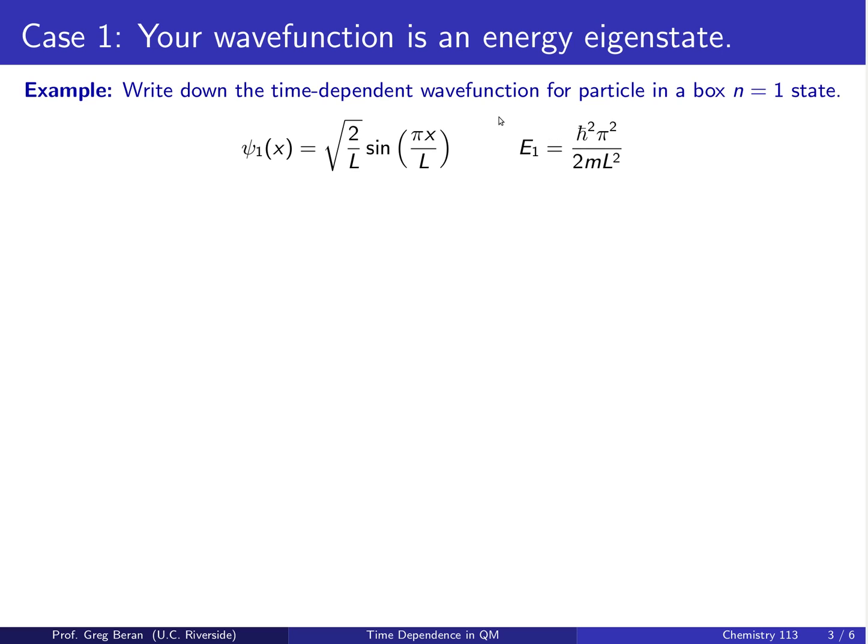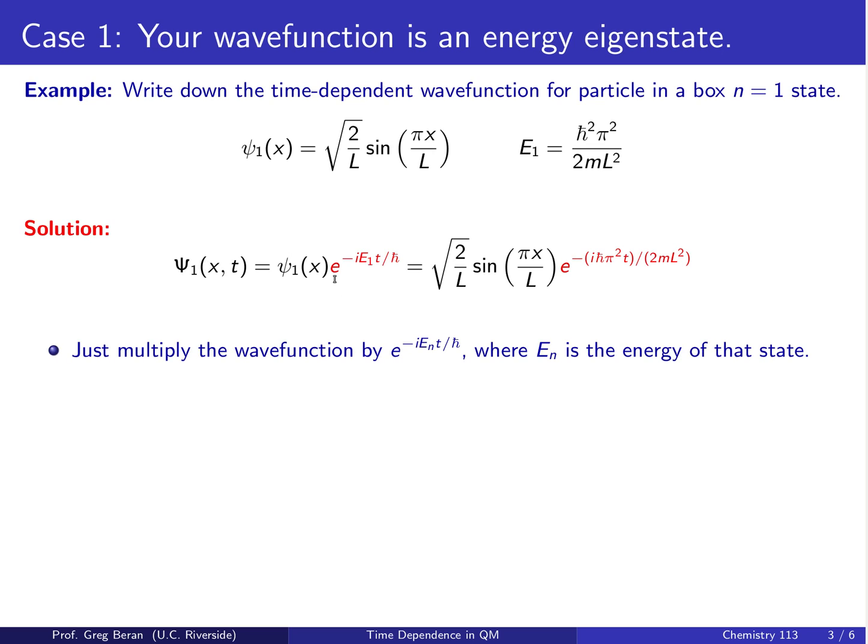If we want to write down the time-dependent version of ψ₁, we're just going to take ψ₁ and multiply it by e to the minus i E₁t over h-bar, where E₁ is just this energy here, the energy of this particular eigenstate.